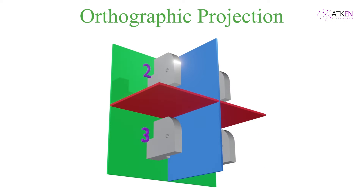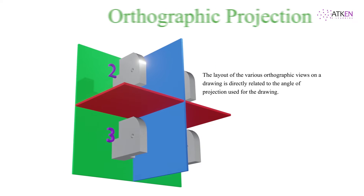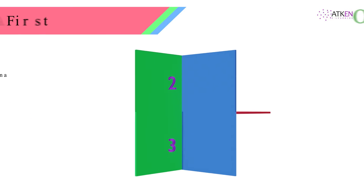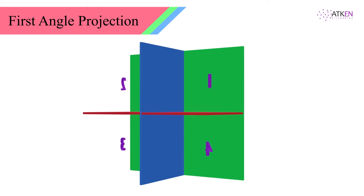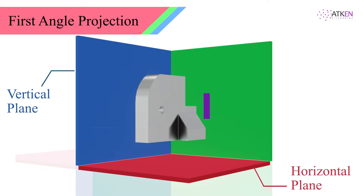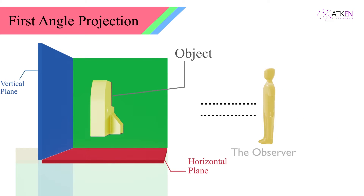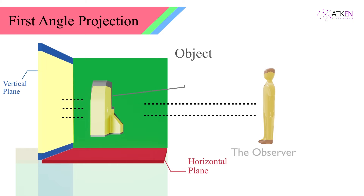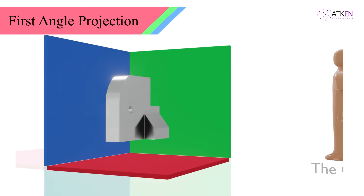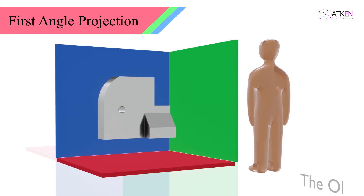The layout of the various orthographic views on a drawing is directly related to the angle of projection used for the drawing. In first angle projection, the object is assumed to be situated in the first quadrant, in front of the vertical plane and above the horizontal plane. The observer is positioned at infinity, and the object lies between the observer and the respective plane. Therefore, the view closer to the observer is projected on the plane situated on the other side of the object.